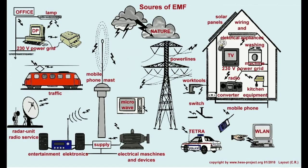I explained in layman's terms what a regular sine wave — a regular radio wave — looks like versus a square wave, which is a telltale sign of a microwave, and also a sawtooth wave, which is also a telltale sign of a microwave. I also explained that's why they use microwaves in cell phones — because they can pass through buildings like there's nothing there.